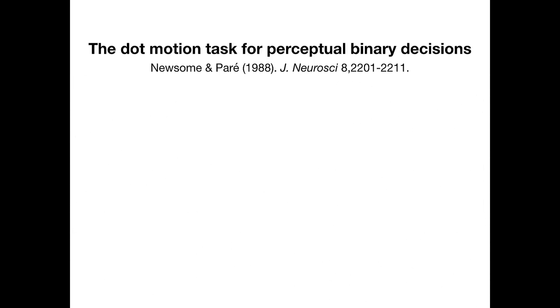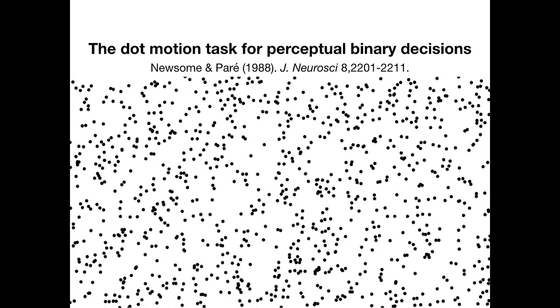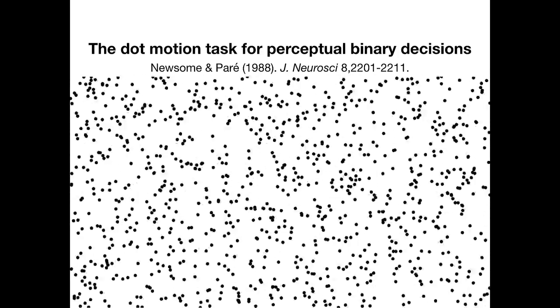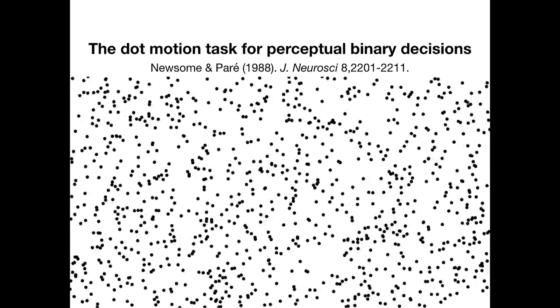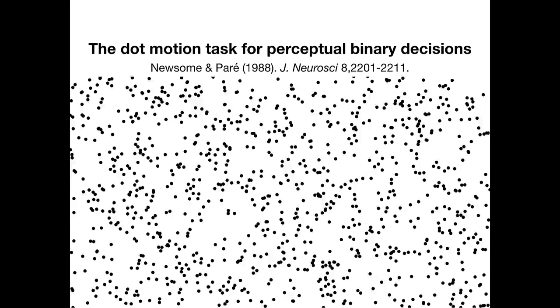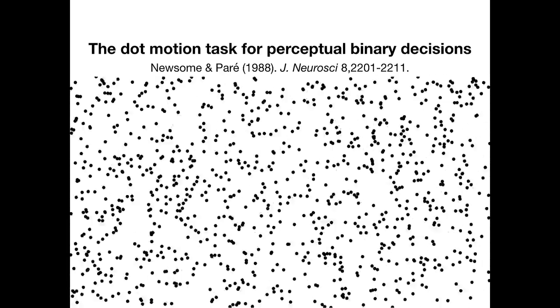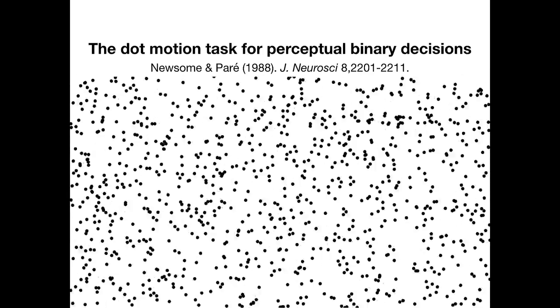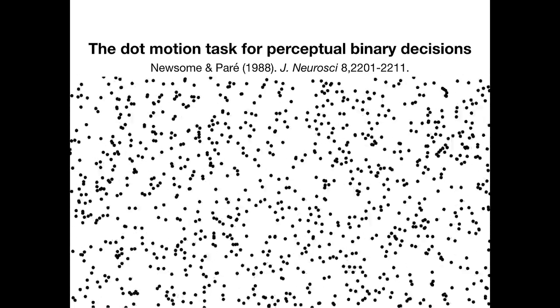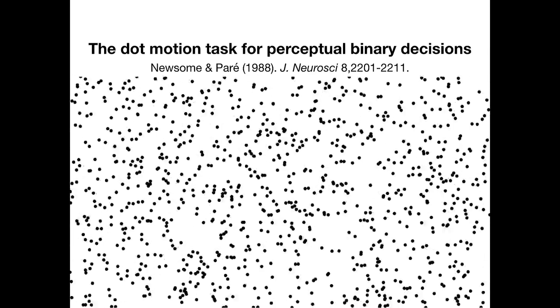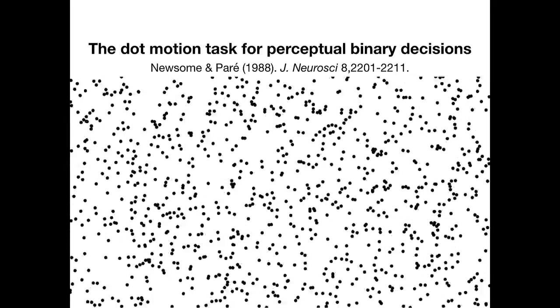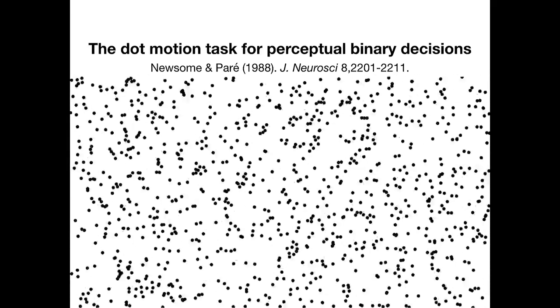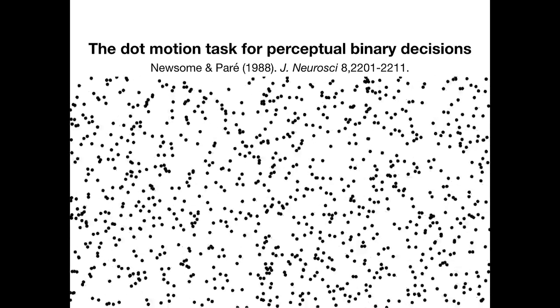However, if we change the ratio of coherent to incoherent motion, the task becomes a bit more difficult. And so if I ask you the same question again, who says the motion is to the left? Who says it's to the right? Who's not sure? Yeah, so clearly much more difficult with low coherence, low information. Congratulations to those of you who said it's to the right. Your perceptual decision-making is about on par with the most highly trained monkeys.